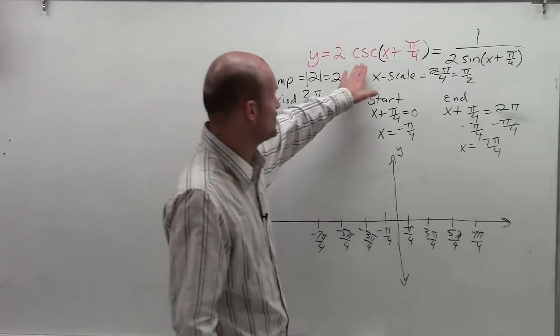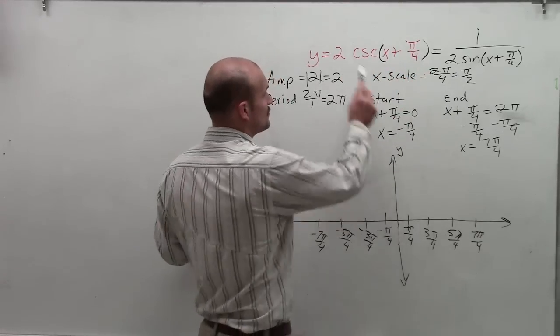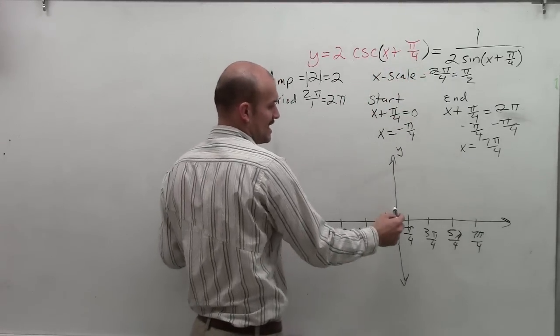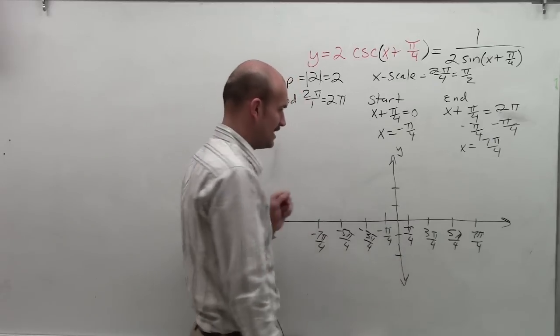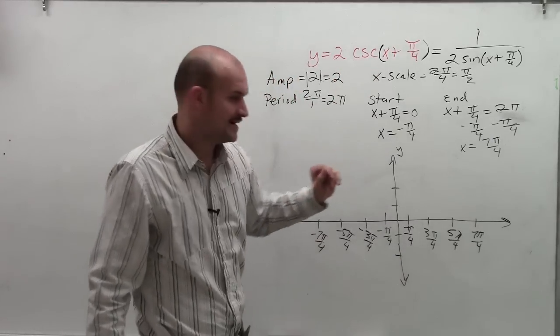So now what I need to do is, remember, I'm dealing with the sine function. Or before I actually go to this, I know my amplitude is going to go up to 2 and down to negative 2. So now I'm just going to graph my sine function.